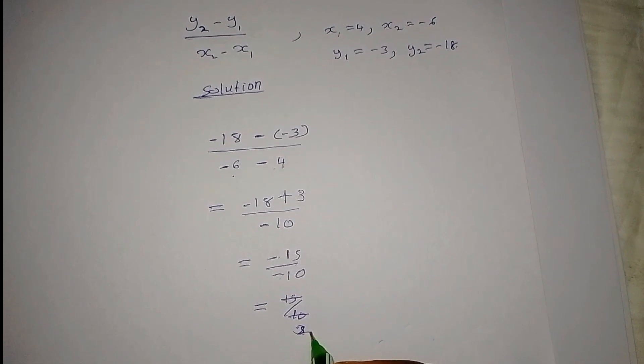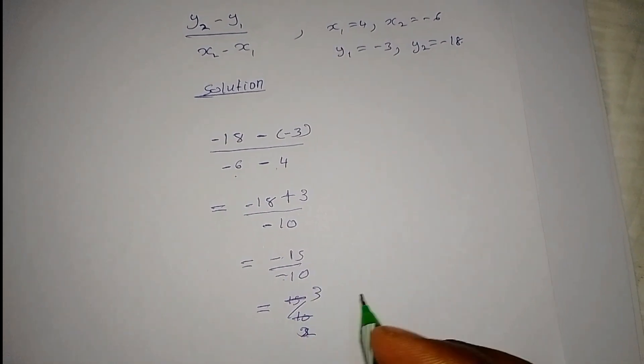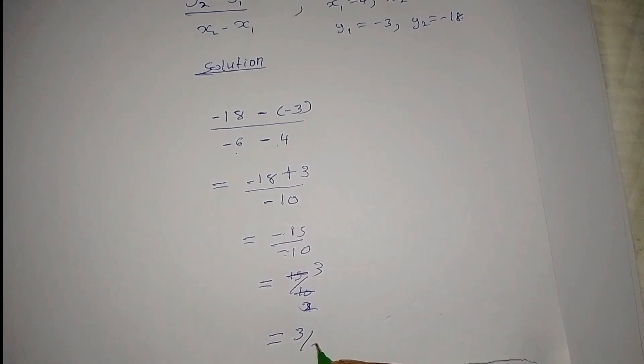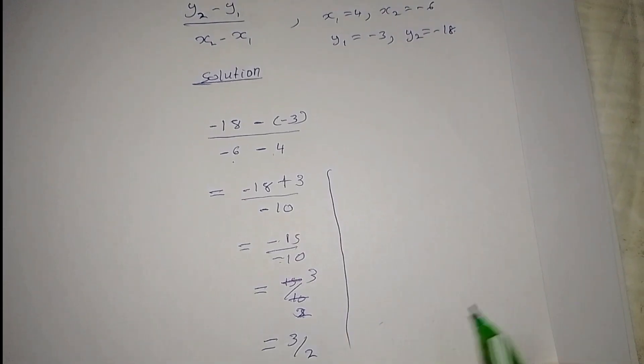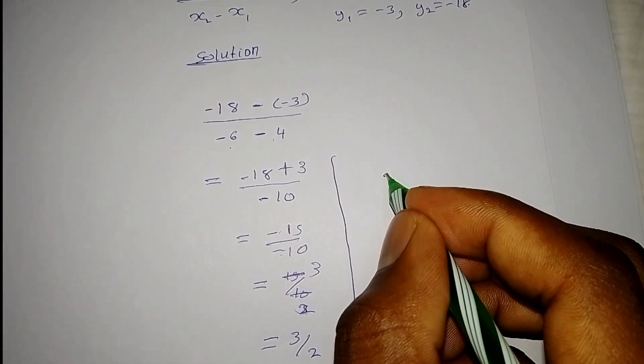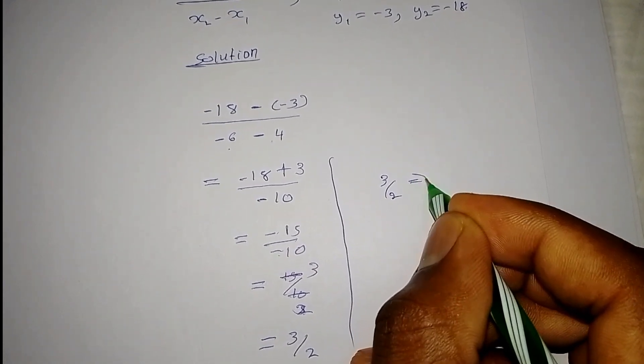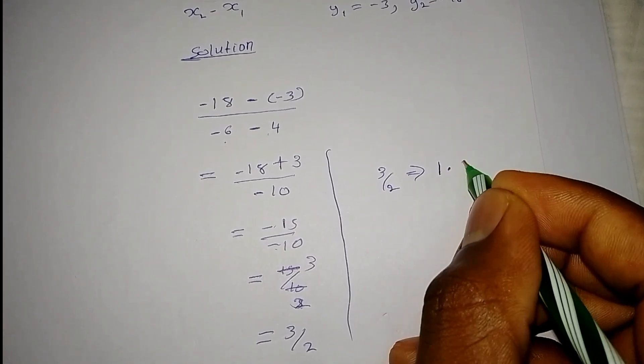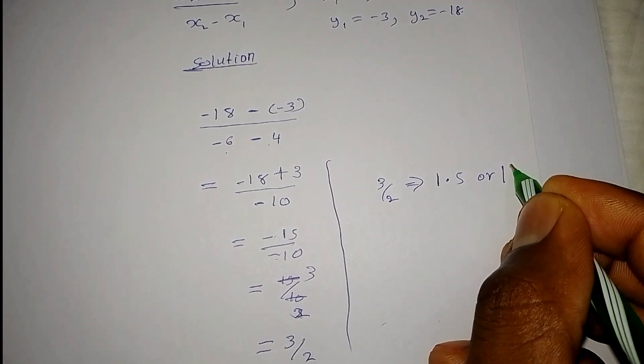If you want to write it as a mixed fraction, 3 out of 2 is the same as 1.5 or 1 and 1 out of 2, and that becomes the solution